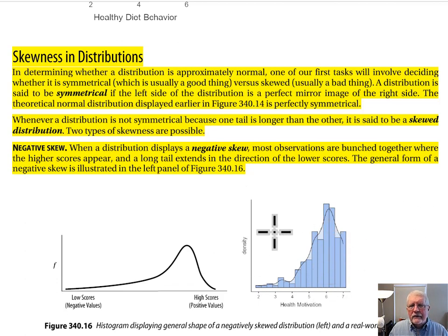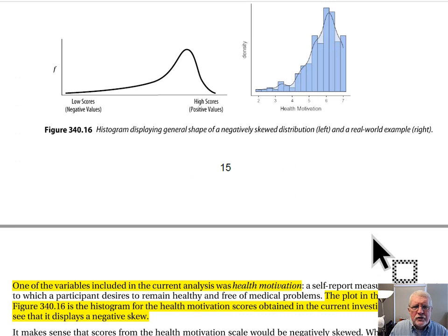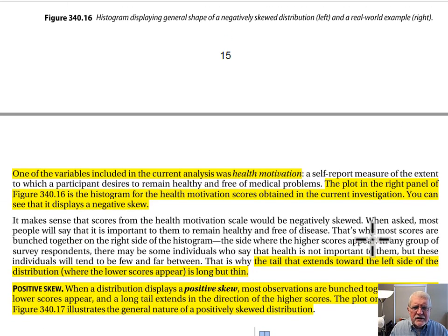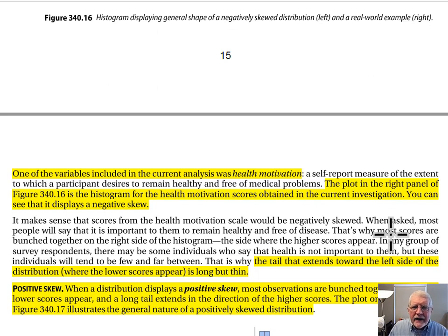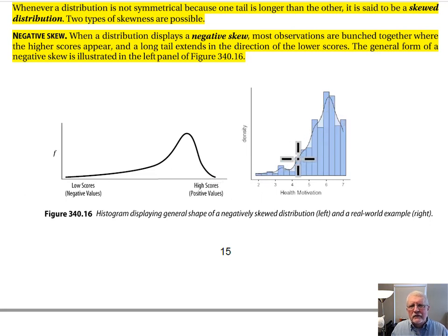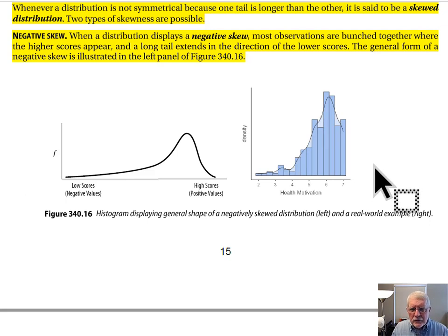One of the variables in our current analysis — Health Motivation — displays a negative skew. The histogram for Health Motivation shows most people are lumped together where the higher scores are, and there is a long tail pointing in the direction of the lower, more negative scores. That tells us this is a negatively skewed distribution.